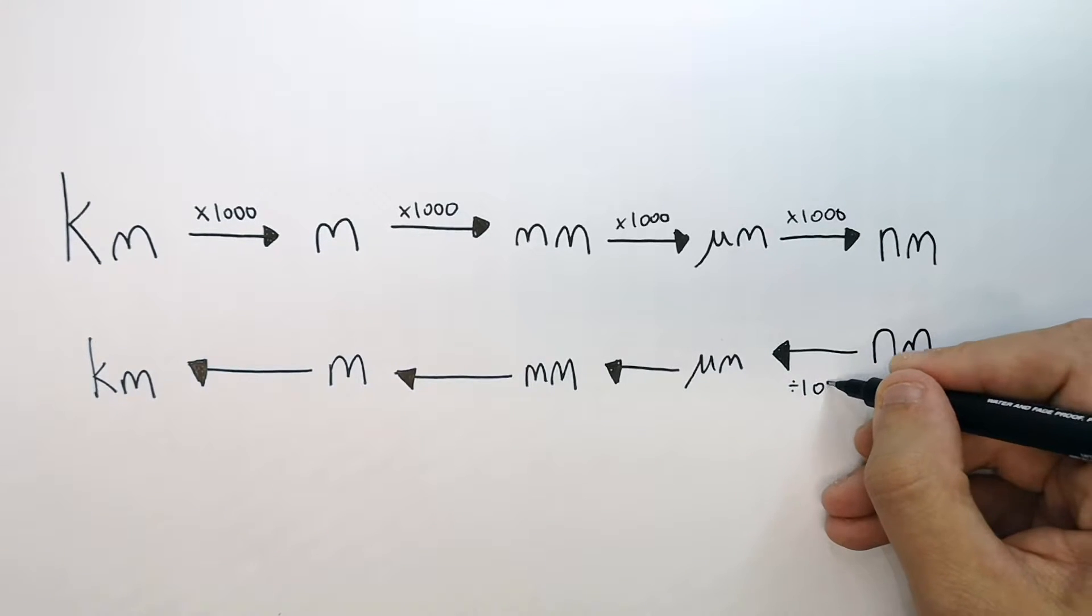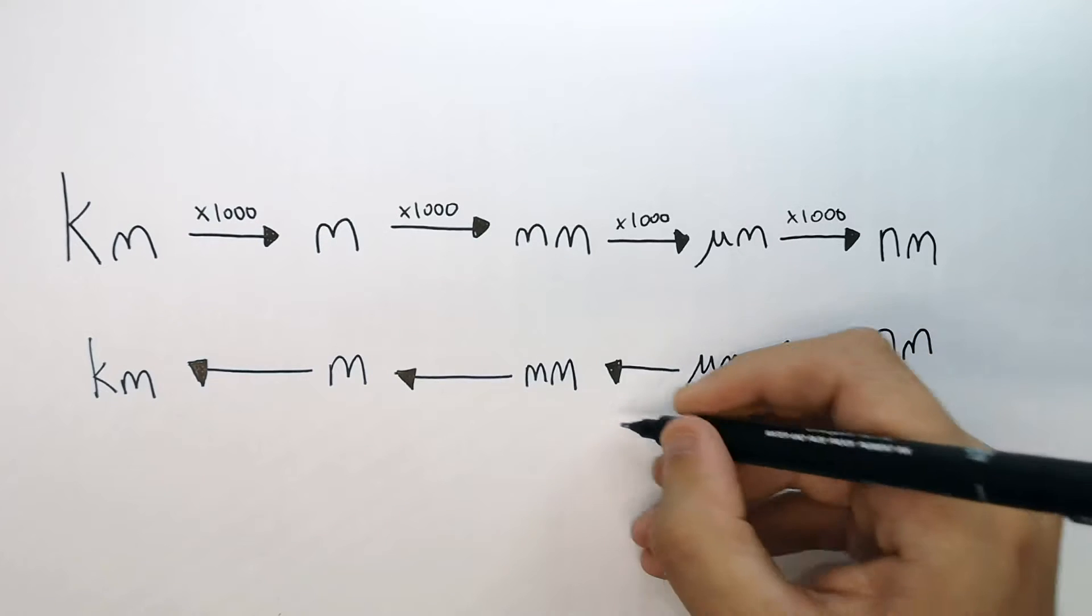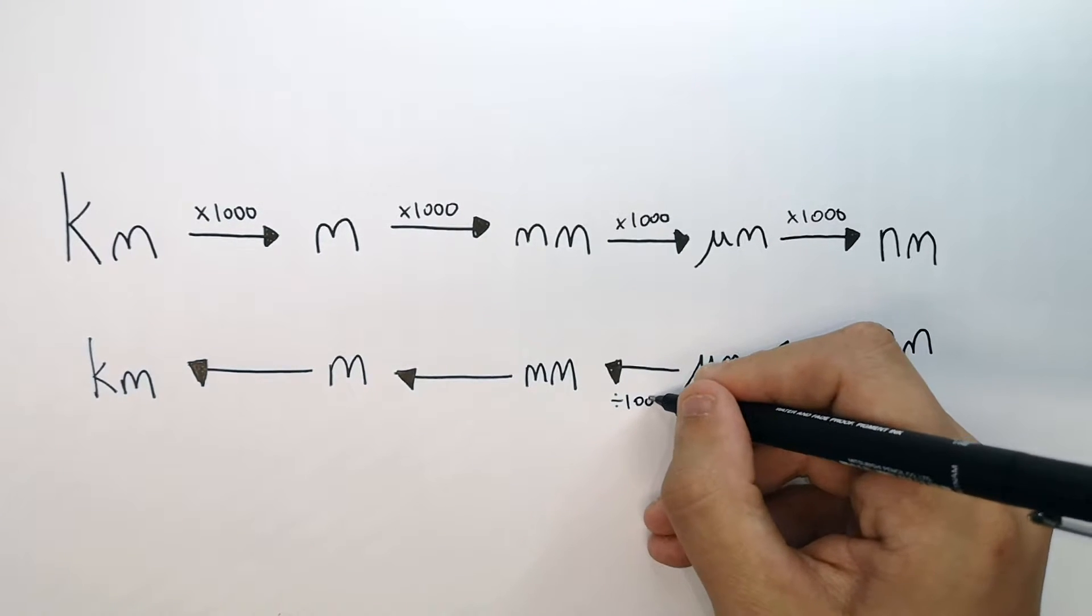So to go from nanometres to micrometres, you divide by a thousand. And then to go from micrometres to millimetres, you divide by a thousand.